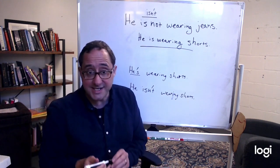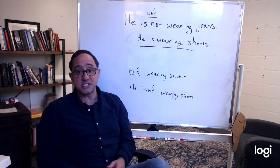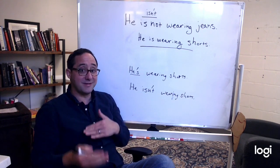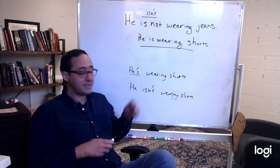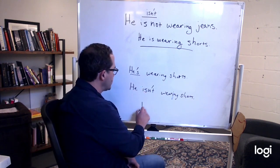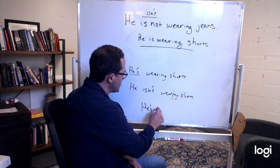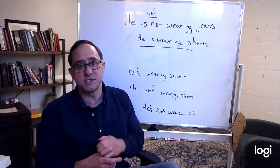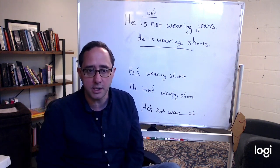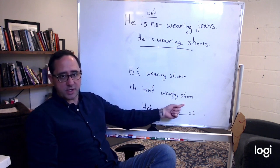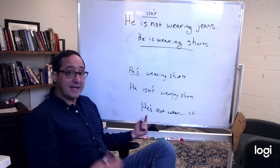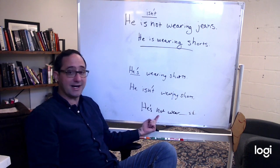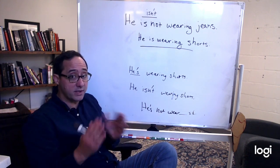Now we'll practice this a little bit, but I always want to talk to you about what you should expect to hear from Americans. Americans often will contract in this way and add a 'not.' So they'll say 'he's not wearing shorts.' This is not the proper way as you would speak in school or at work — you would say 'he isn't wearing shorts' — but sometimes in American speech, they'll contract 'he's' and add 'not.' So you have to contract one or the other.